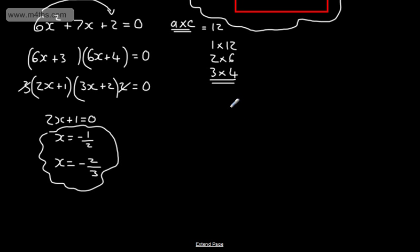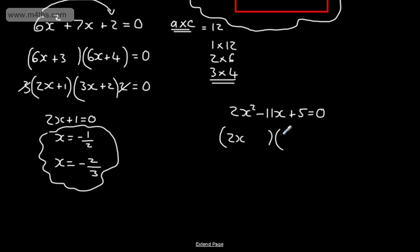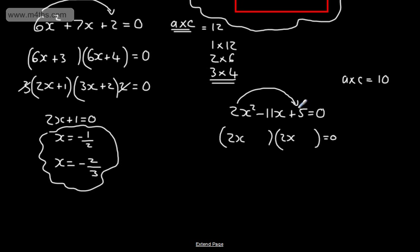Let's look at another one: 2X squared minus 11X plus 5 is equal to 0. We want to solve this equation — if you were just given this as an expression and wanted to factor it, you could do exactly the same. So in each bracket, I'm going to have 2X instead of starting with X. I do A times C, so A times C gives me positive 10. If this is positive, either both numbers are going to be positive or both numbers are going to be negative. We're looking for two numbers that multiply to give positive 10 and add to give minus 11.